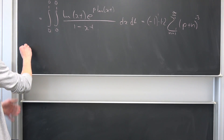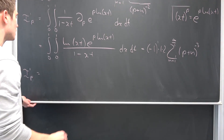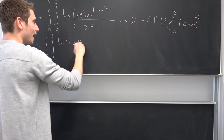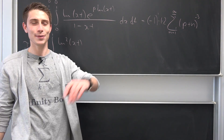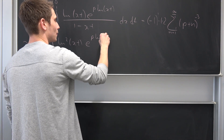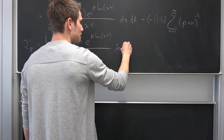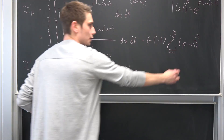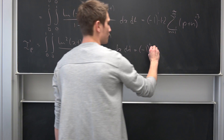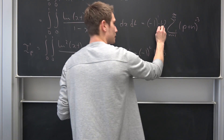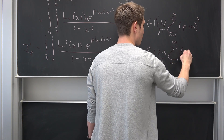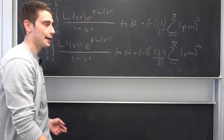Let's do one more iteration. I double prime: using Leibniz rule again, we get the double integral of natural log squared of x times t, times e to the p times ln(x times t), over (1 minus x times t), integrated with respect to x and t. On the series side, this gives negative 1 squared — times 1 times 2 times 3, where 1 times 2 is 2 factorial and 1 times 2 times 3 is 3 factorial — times the sum from n equals 1 to infinity of (p plus n) to the negative 4th power. We can already see a pattern forming.